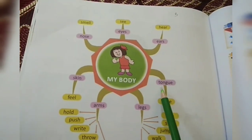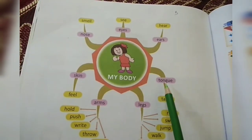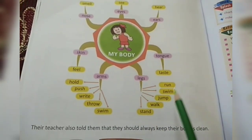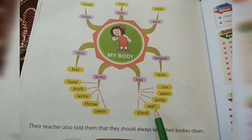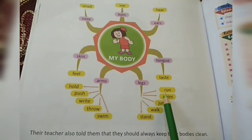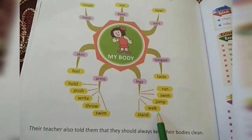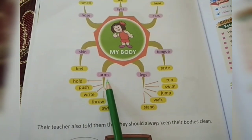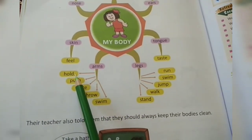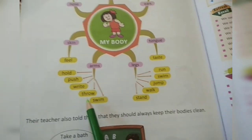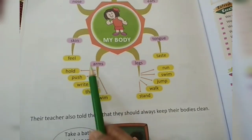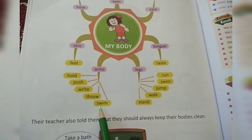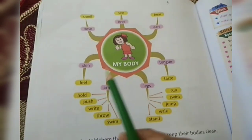Then tongue — we can taste with our tongue. L-E-G-S, legs — we can run, swim, jump, walk and stand with our legs. A-R-M-S, arms — we can hold, push, ride, throw and swim with our arms.